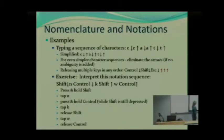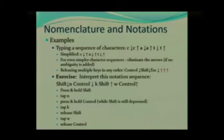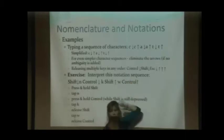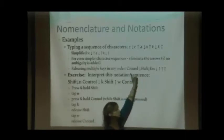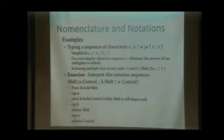One other thing: sometimes you can shorten notation when you have multiple keys depressed and you can release all of them at the same time and the order doesn't matter. In that case, you can put a bunch of arrows right next to each other. In this example, you're pressing the Control key and holding it down, pressing Shift while still holding Control, pressing Escape while still holding both Shift and Control, and then releasing them all at the same time.